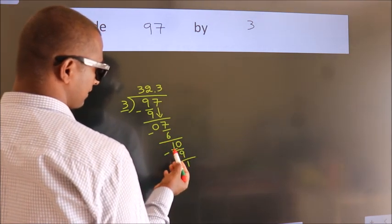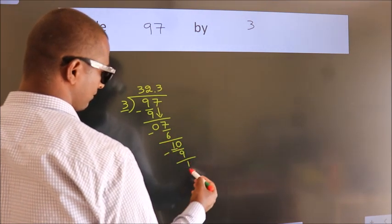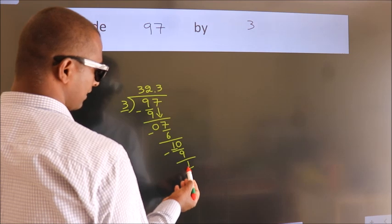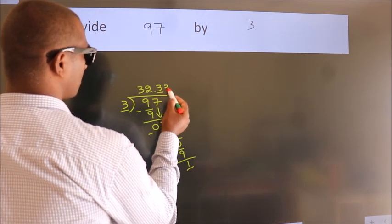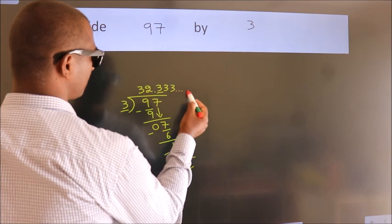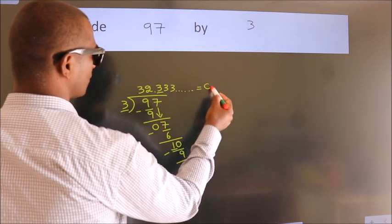We had 1 here, and we got 1 again. That means this number keeps on repeating. So this is our quotient.